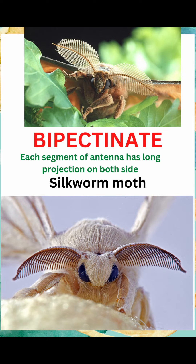Next is bipectinate type. It is like pectinate type but in this, long projections can be seen on both sides of the segment.